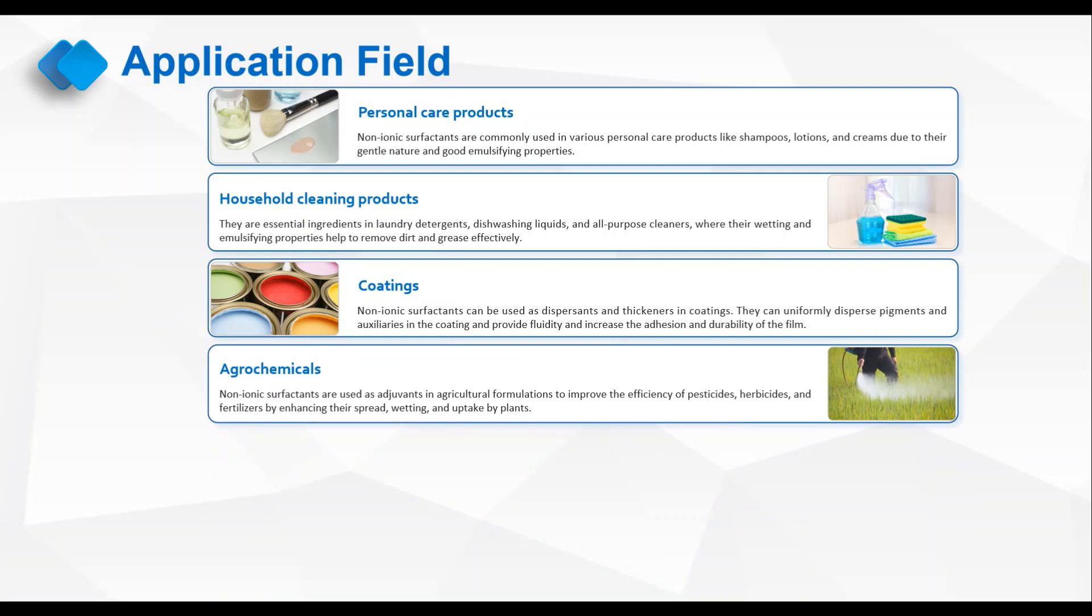Agrochemicals. Nonionic surfactants are used as adjuvants in agricultural formulations to improve the efficiency of pesticides, herbicides, and fertilizers by enhancing their spread, wetting, and uptake by plants.